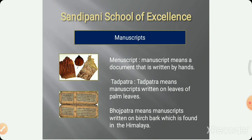Taad patra is written on palm leaves. Bhoj patra means a manuscript written on the bark of the birch tree, which is found in the Himalayas. In the Himalayas there is a special tree, and the bark — meaning the outer layer of the trunk, like our skin — is called the bark of the birch plant. Writing on that is called bhoj patra. So manuscripts are of two types: taad patra and bhoj patra.